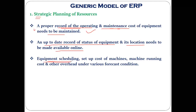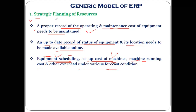Equipment scheduling is also managed — just like an employee has a schedule for what work to do today, or like teachers follow a timetable, equipment is similarly assigned specific work under strategic planning of resources. Additionally, setup cost and installation cost of a machine when it newly comes into the company, machine running cost when the machine is actually performing an activity, and maintenance cost — all these things are covered under strategic planning of resources, which is done as long-term planning.